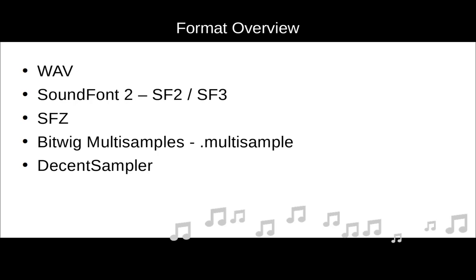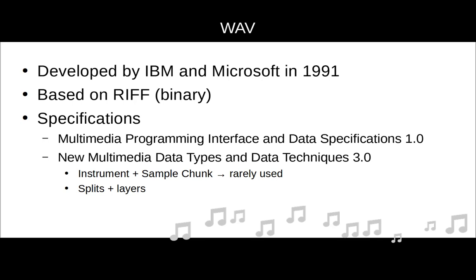First, the good old WAV format, developed by IBM and Microsoft back in 1991. It's based on the RIFF format — RIFF was the base container format made up of different parts called chunks. One of those chunk specifications is the WAV format. You can find these two specifications: 'Multimedia Programming Interface and Data Specifications,' which covers RIFF and its implementations, and 'New Multimedia Data Types and Data Techniques version 3,' which talks specifically about WAV and extensions.